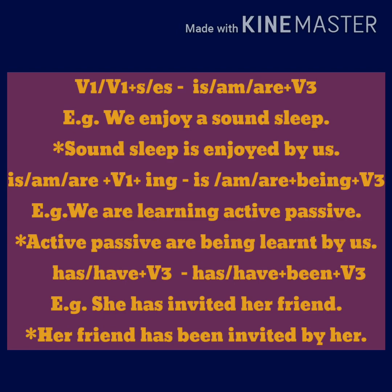Second rule: present continuous tense — is/am/are + V1+ING — will change into is/am/are + being + V3. For example, 'We are learning active passive.' Passive: 'Active passive are being learned by us.' Present perfect tense — has/have + V3 — will change into has/have + been + V3. For example, 'She has invited her friend.' Passive: 'Her friend has been invited by her.'